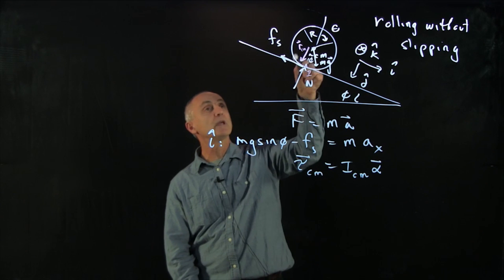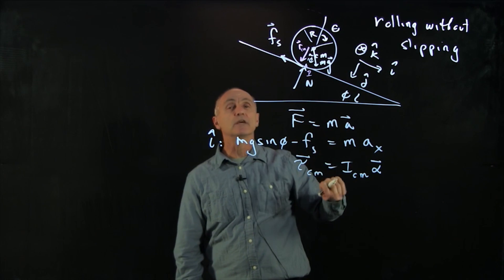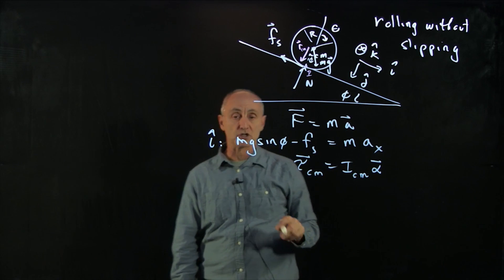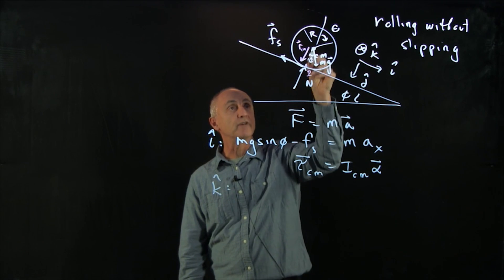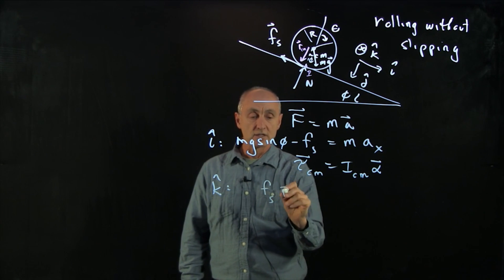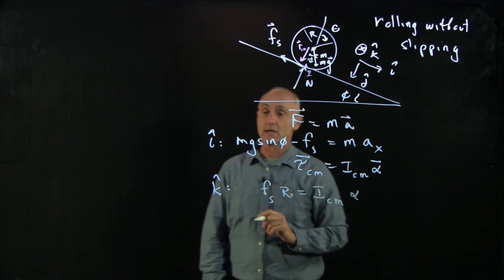And the only torque that we have is from the friction force. And that friction torque is going to give us a positive angular acceleration in the k hat direction. It's at right angles with the vector r. So we have fs times r equals i center of mass times alpha.